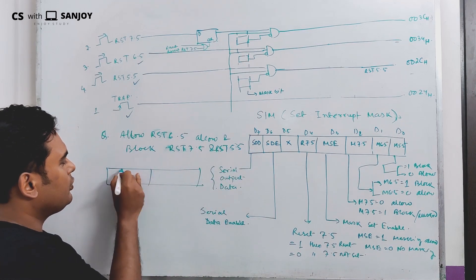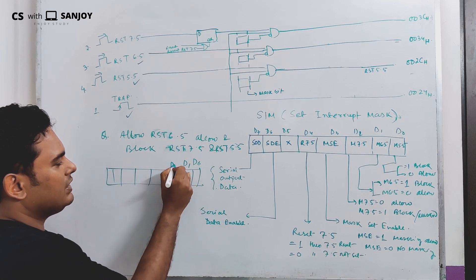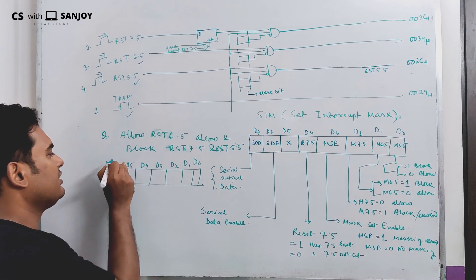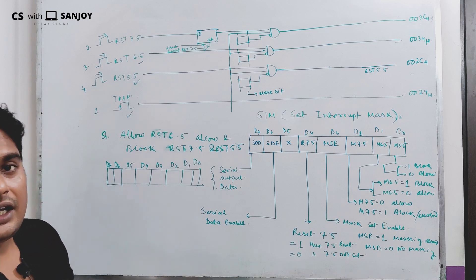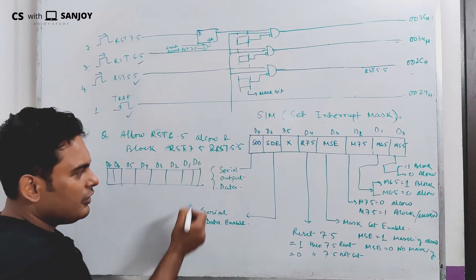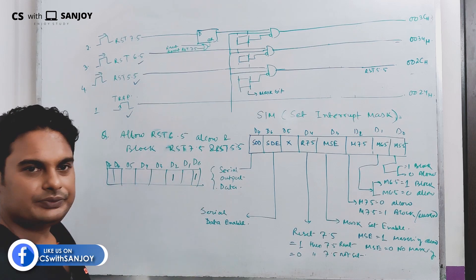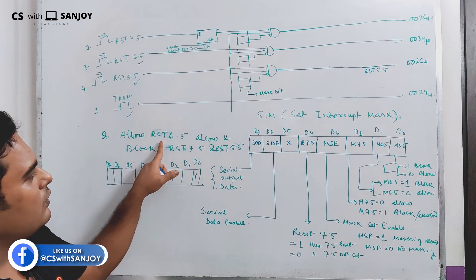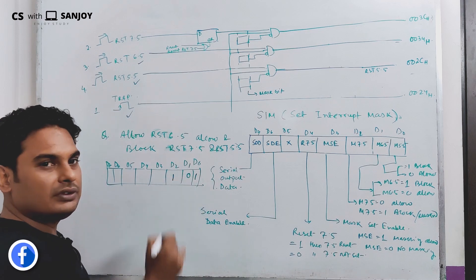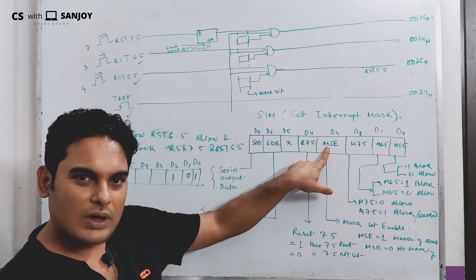So: D0, D1, D2, D3, D4, D5, D6, D7. We need to block 7.5 and allow 6.5 and block 5.5. So M7.5 = 1, M6.5 = 0, M5.5 = 1. D1 corresponds to the relevant mask bits.